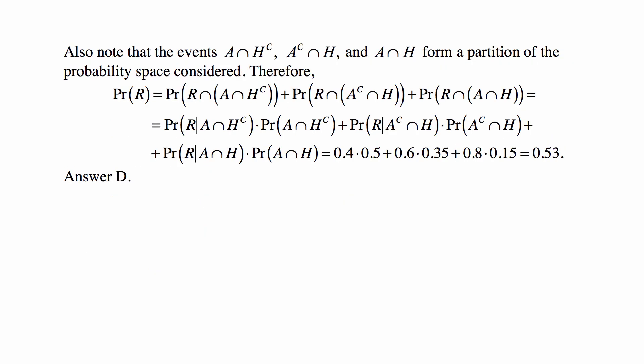We can note immediately that the events A ∩ H^c, A^c ∩ H, and A ∩ H form a partition of the probability space considered, because every person considered has at least one policy. So every person has either auto and not homeowners, or homeowners and not auto, or both.